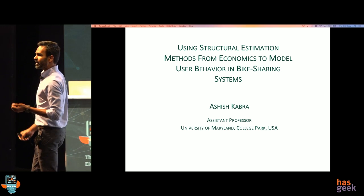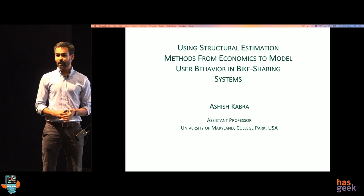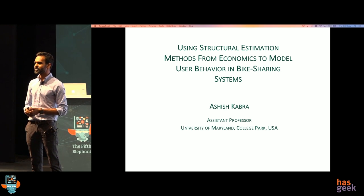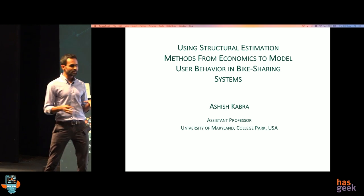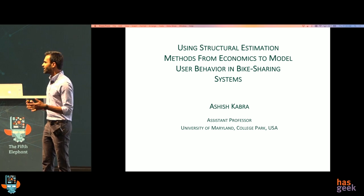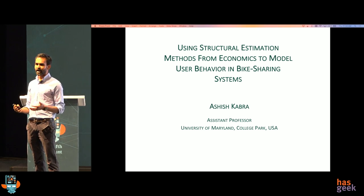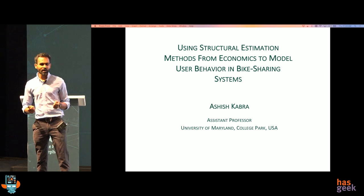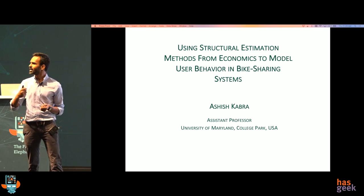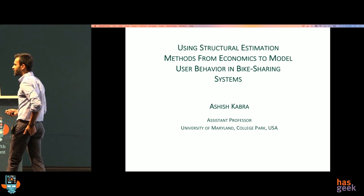I'm Ashish Kabra. I am assistant professor at the University of Maryland, in a department called Decisions, Operations, and Information Technology, which is a nice overlap of people from operations research, industrial engineering, computer science, economics, and statistics, and we are housed in the business school. The main idea is to actually work closely with business applications rather than just building theory on its own, which can sometimes happen in academic departments.